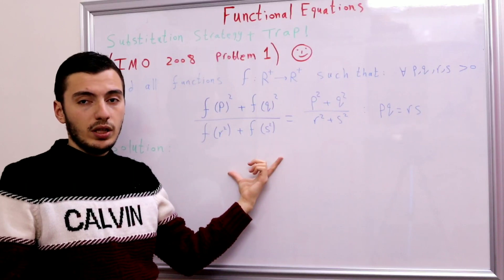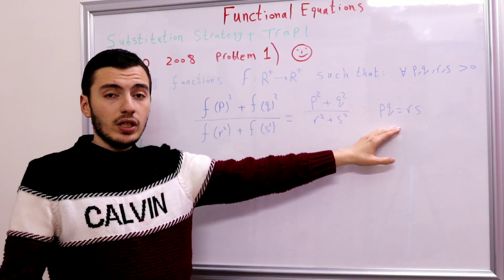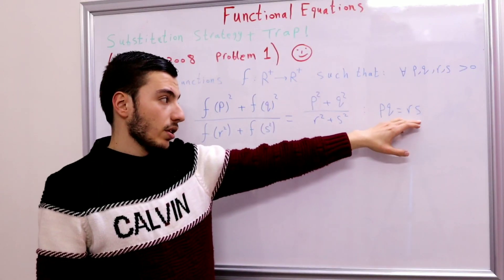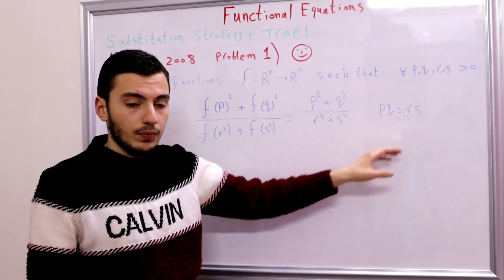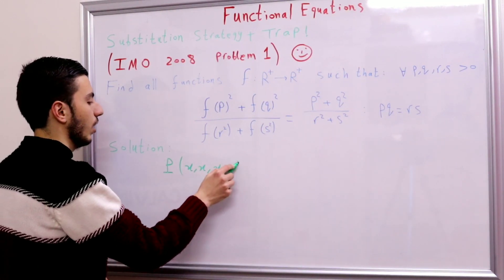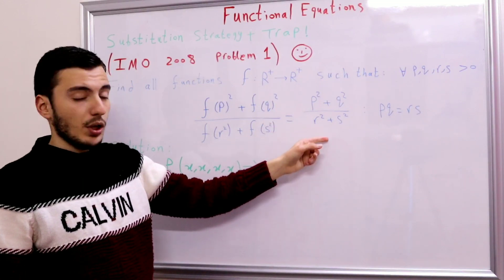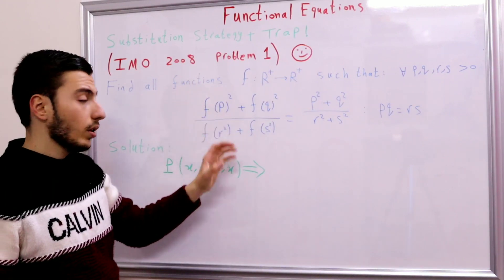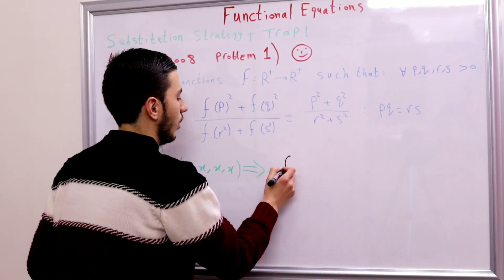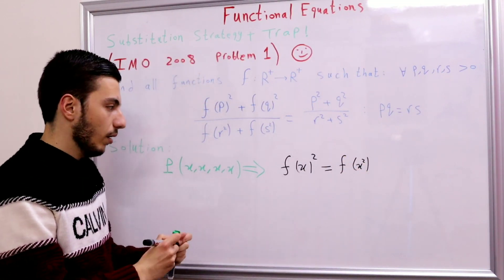How can we start? Since we have a precondition, we consider the simplest special case: p = q = r = s = x. Substituting everything with x, the right-hand side becomes 2x²/2x² = 1, and the left-hand side becomes 2f(x)²/2f(x)² = 1. This gives us the relation f(x²) = f(x)².